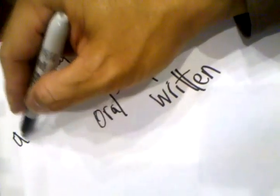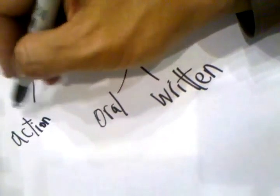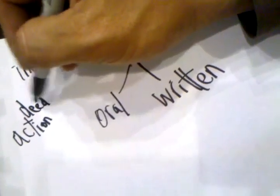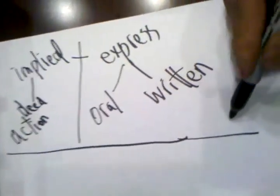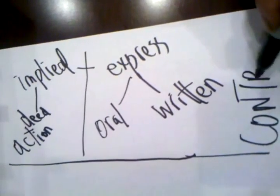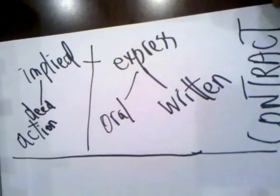Implied is like by action or by deed. So let's say like, this is what we are talking about contract. Implied contract or express contract.